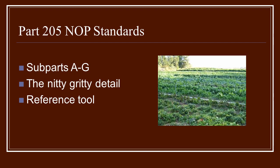Within Part 205, the National Organic Production Standards, we have subparts A through G. This is really the nitty-gritty, the down-and-dirty detail of the rules and regulations of organic production. It's a great reference tool.